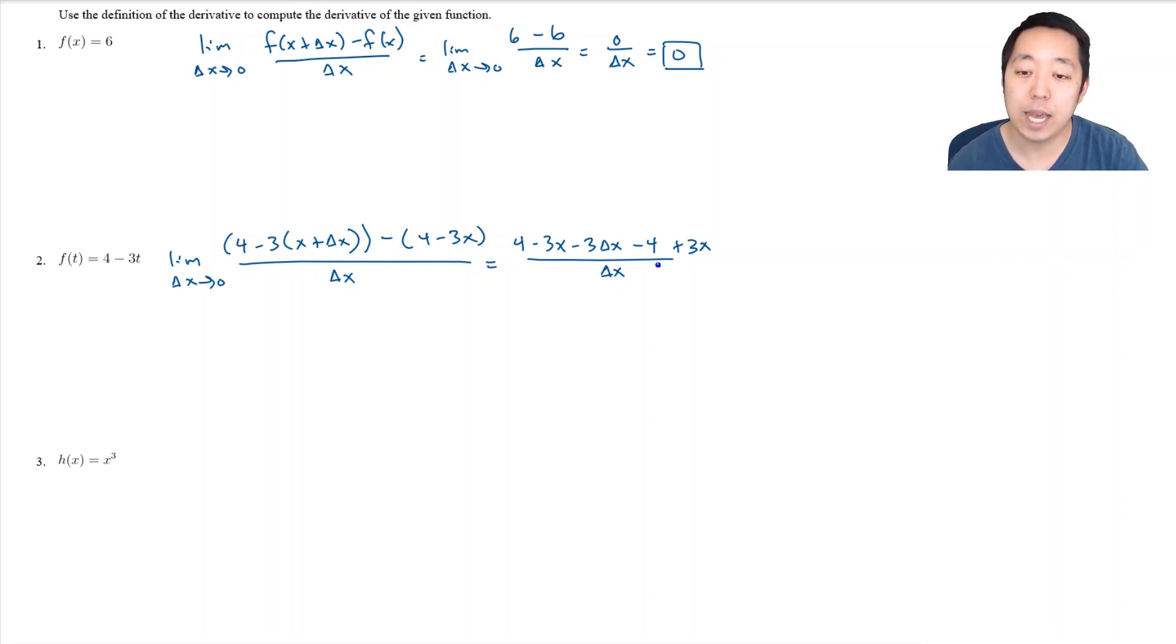Now one of the key things that should always happen in a scenario like this when you're simplifying these is everything without a delta x should eliminate. So I have a four and a minus four, that cancels. I have a minus three x and a plus three x, that cancels. And so I'm left with minus three delta x over delta x. And then because of that, the delta x's cancel and I'm left with negative three.